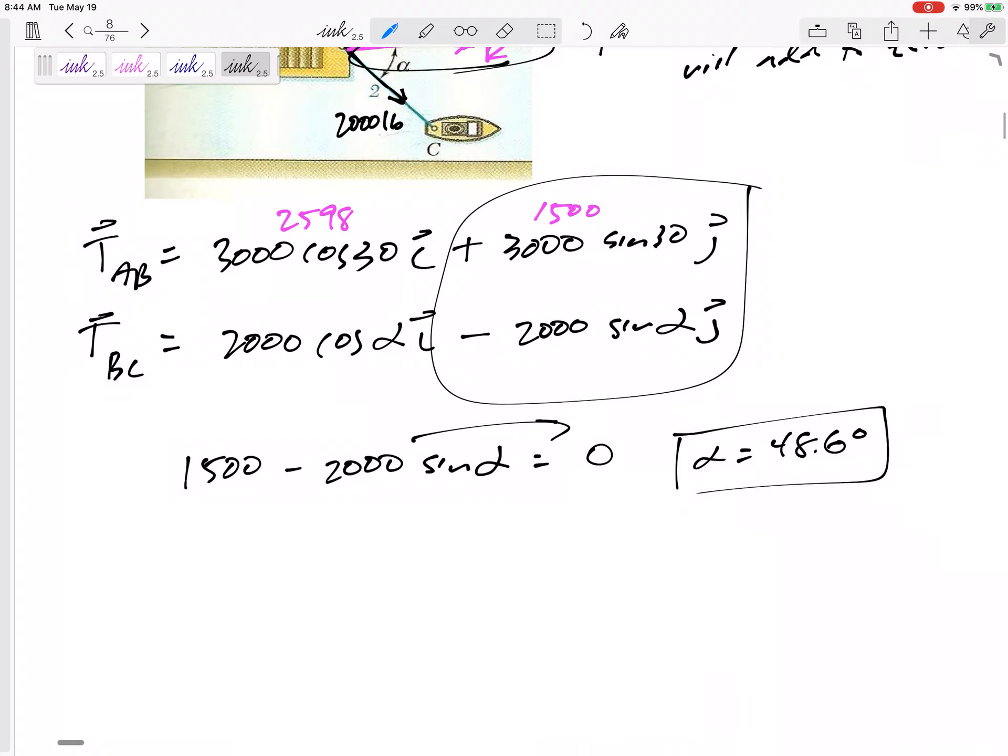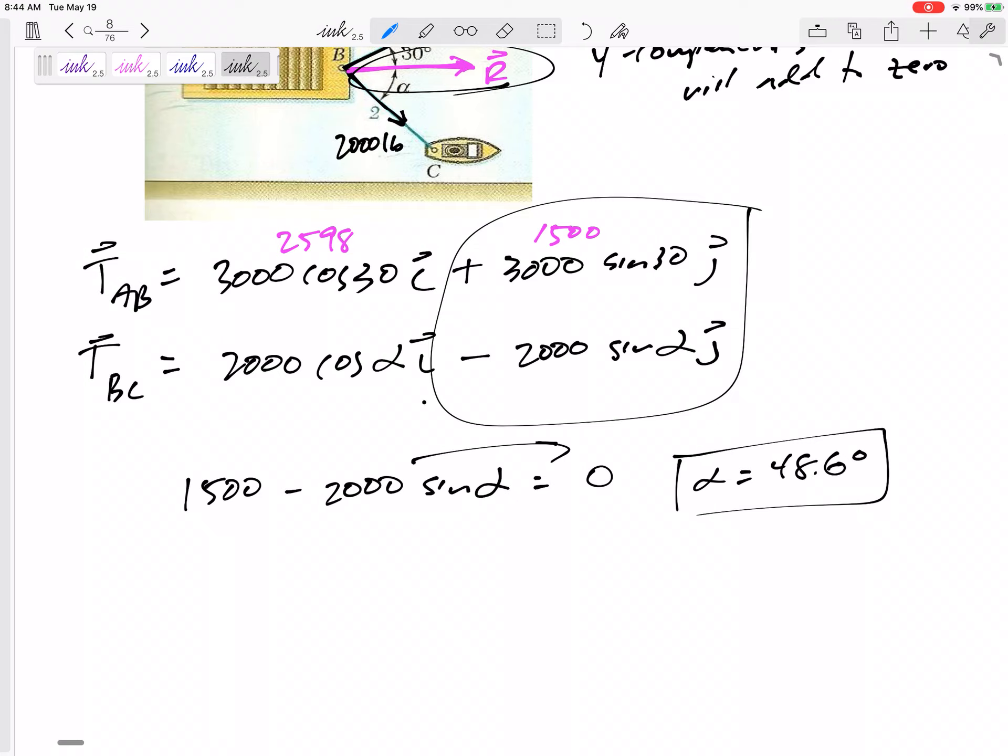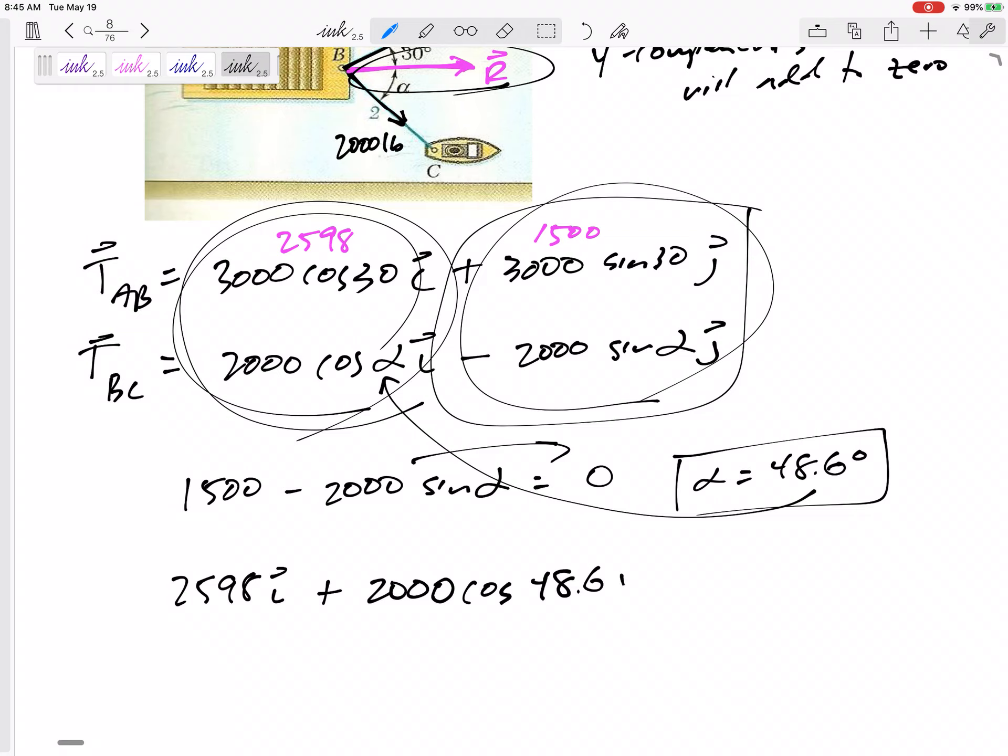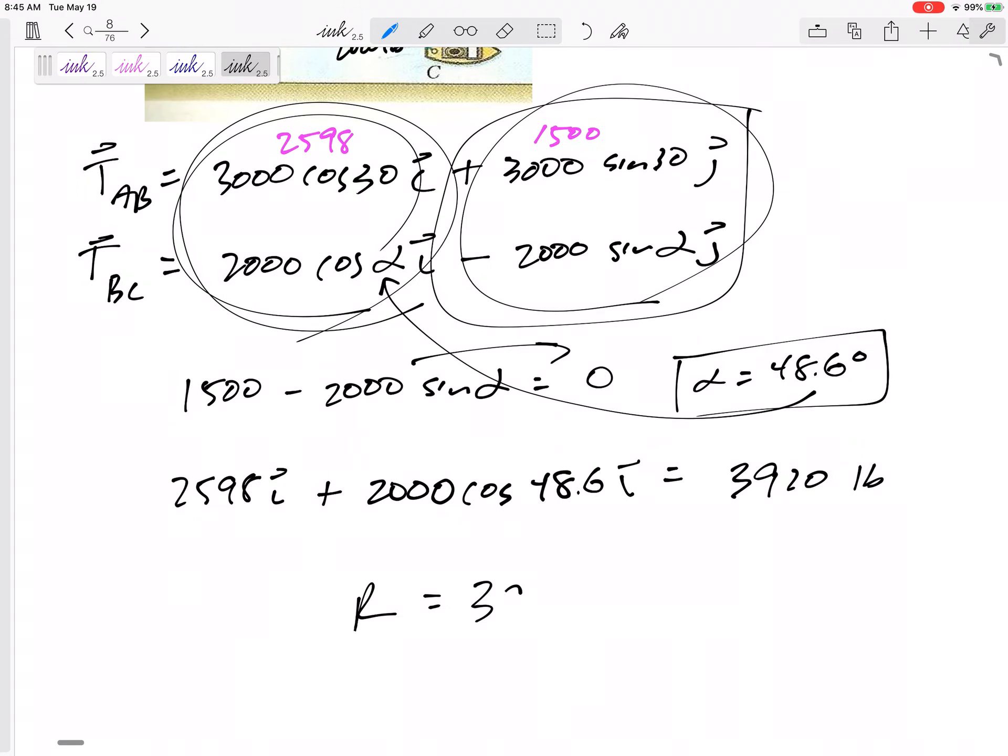Then it says, what is the resultant? Well, the resultant, I need to add these together. I've already added these together. It's going to equal to zero in the j. But adding these together, let's plug in 48.6. So the 2598 in the i, 2000 cosine 48.6 also in the i. I can add those up in the i, 3920 in the i. So the resultant is going to be 3920 pounds. And I already know it is horizontal. I already know it's in the i direction. But I could put an i in there.